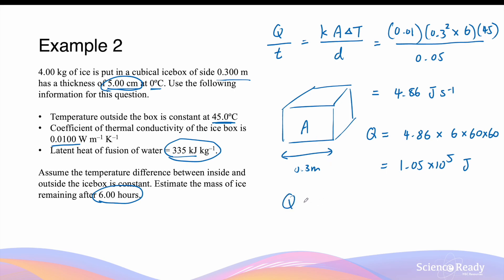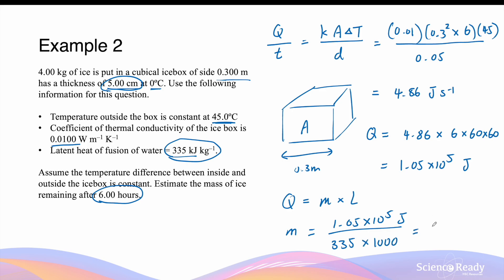For latent heat of fusion, Q — the heat absorbed by the ice — is equal to the mass of ice multiplied by the latent heat of fusion L. So the mass of ice melted equals 1.05 times 10 to the power of 5 divided by the latent heat of fusion. Keep in mind we need consistent units: since Q is in joules, we convert the latent heat of fusion into joules per kilogram by multiplying by 1000. This gives an answer of 0.313 kilograms of ice melted.